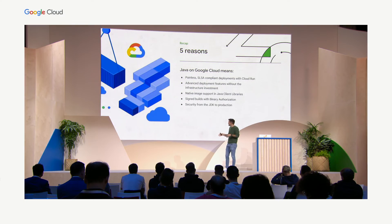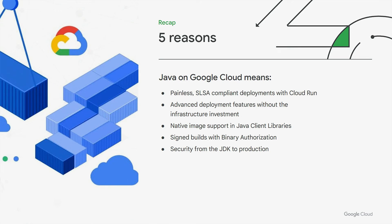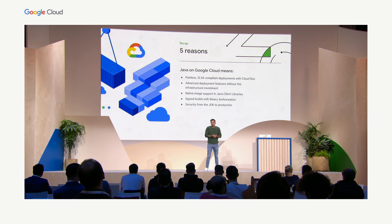Let me recap the five reasons. Easy deployments and pay-less with Cloud Run. Advanced deployment patterns using traffic splitting and canary rollouts. Native image support for your Java client libraries — go build your Java applications to native code. Security from CI/CD using signed builds with binary authorization. And very soon, the Temurin JDK in your serverless applications. I hope I could teach you something new, and I hope you enjoy the rest of the sessions today. Thank you.